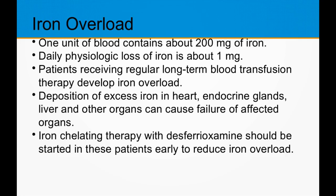The next complication is iron overload. One unit of blood contains about 200 milligrams of iron while the daily physiologic loss of iron is about 1 milligram. So patients receiving regular long-term blood transfusion therapy will inevitably develop iron overload. Excess iron may deposit in the liver, heart, endocrine glands, and other organs, possibly causing organ failure. Iron chelating therapy with desferioxamine should be started early to reduce iron overload.